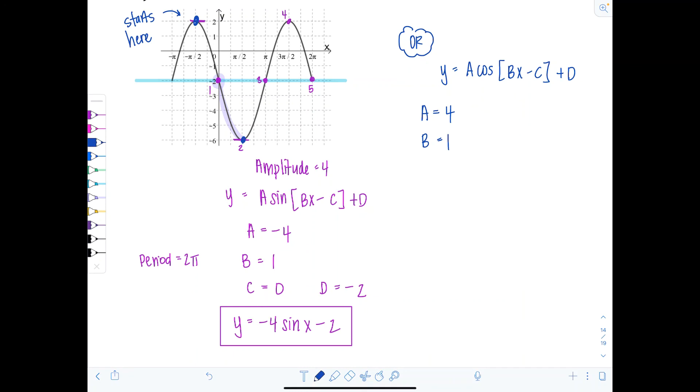Now for the phase shift. Remember, phase shift is equal to c divided by b. And since the phase shift in this case is pi over 2 to the left, that's negative pi over 2. I don't know what c is. And b I just found is 1. So I'm going to replace that with 1. So that means c is equal to negative pi over 2.